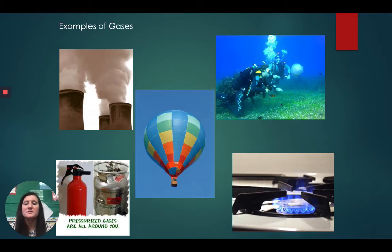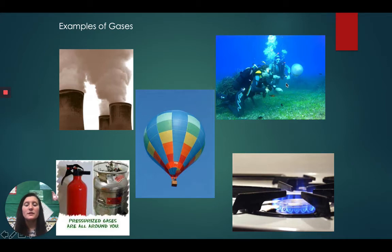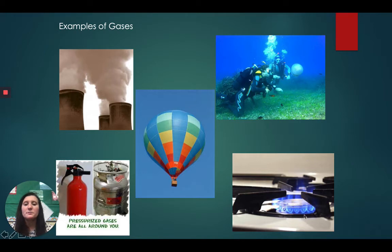Here are some examples of gases. We talked about the hot air balloon, which is a confined space, and factory gases, which are unconfined. Another example is scuba divers — when they breathe out, they are releasing oxygen, which is a type of gas. You might also have a gas top stove at home — you can even see the color of the gas is blue. And another familiar example is pressurized gas inside a fire extinguisher, which you've probably seen at school.